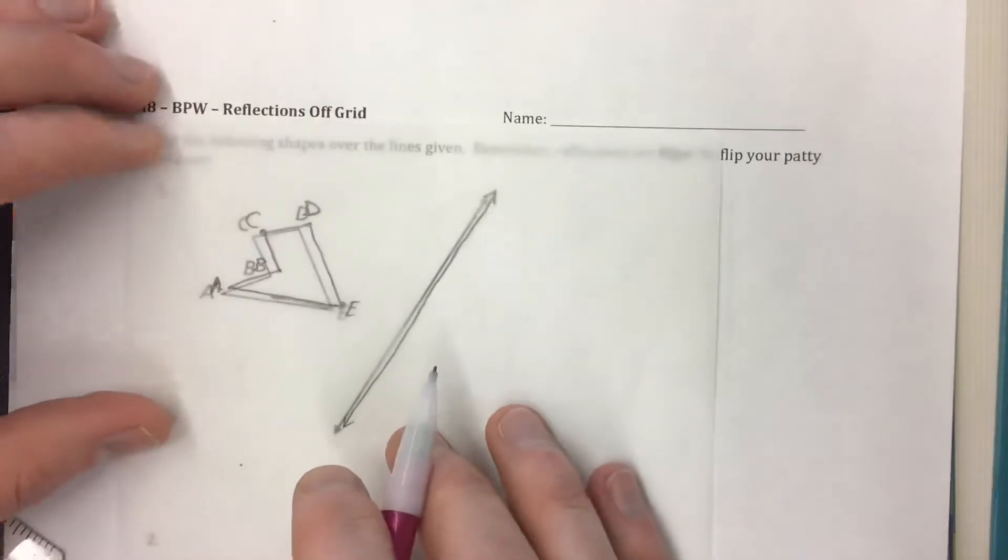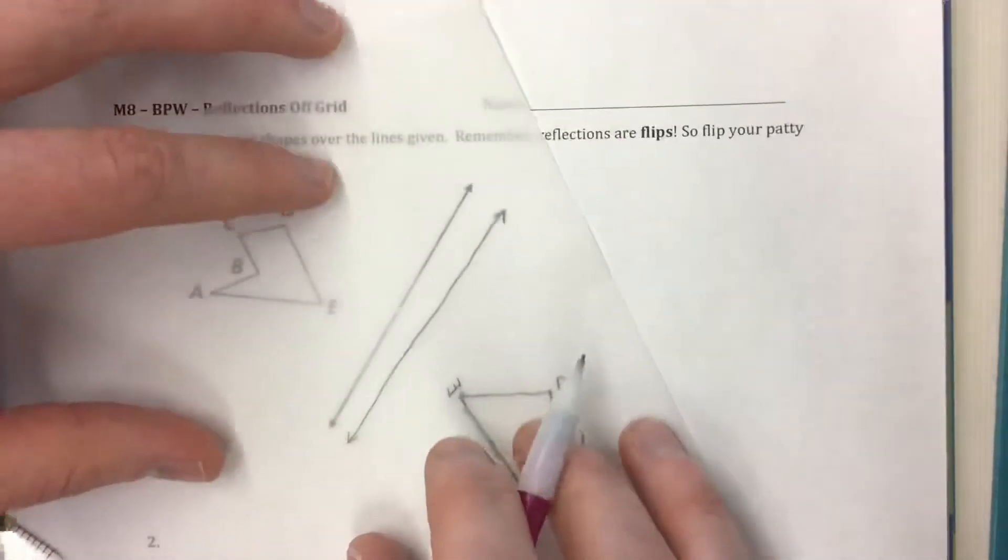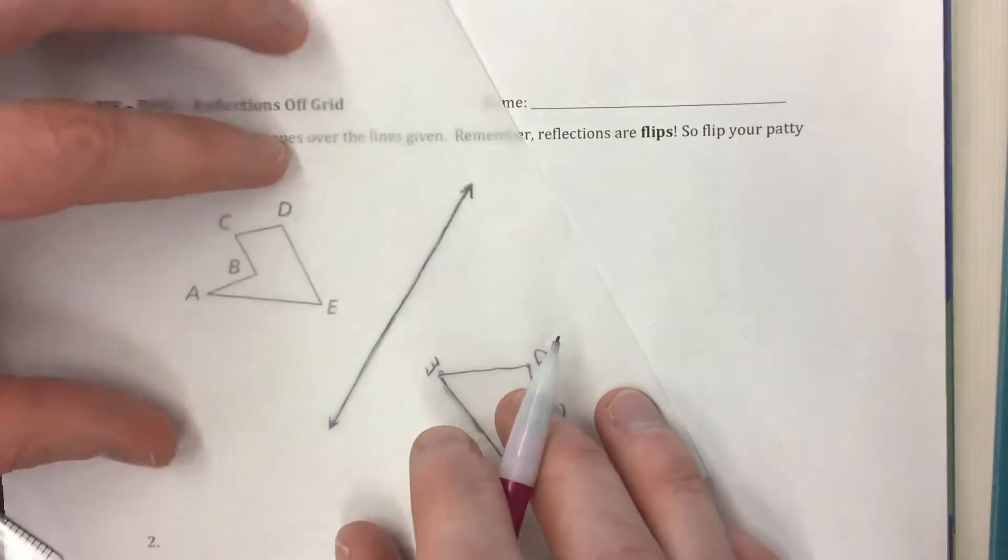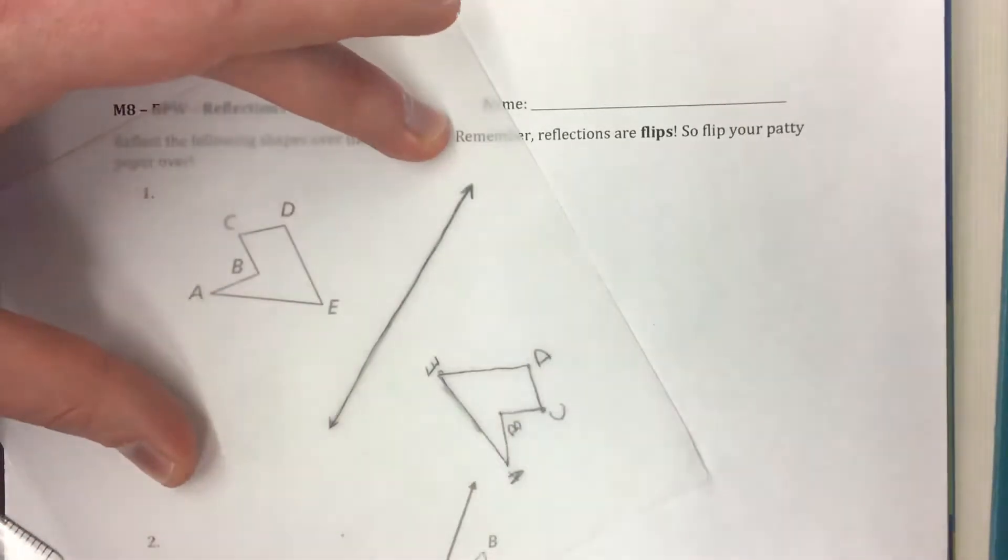One more time this is the original. Flipping it over the line. Line up the line at the ends and then from here you want to draw the new shape.